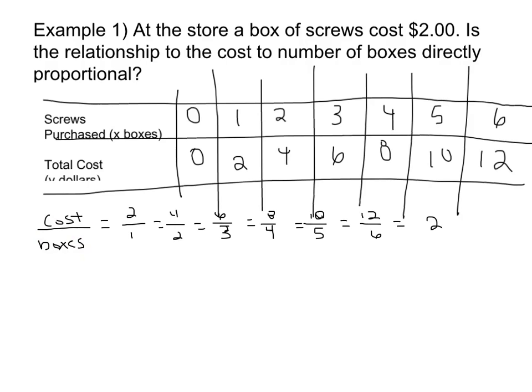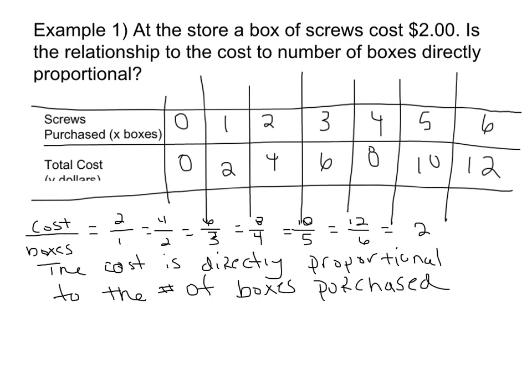Again, we'll learn more about which one is dependent and which one is independent later. Right now, I just want to make sure that you can tell if this is a direct proportional relationship or not. We did determine that all of our ratios were equivalent and therefore the cost is directly proportional to the number of boxes purchased.